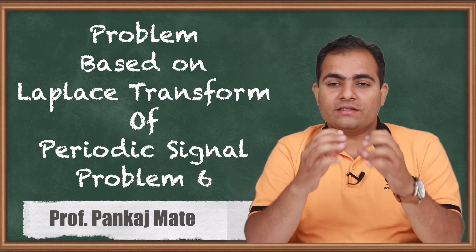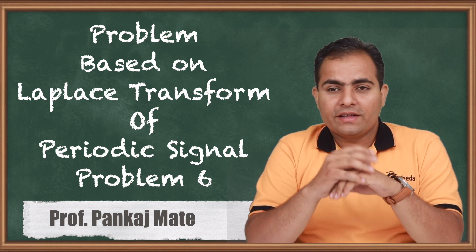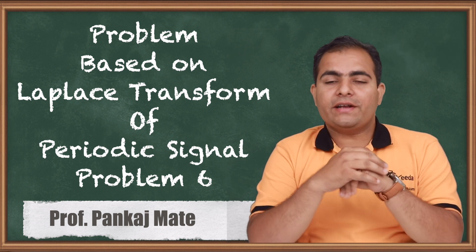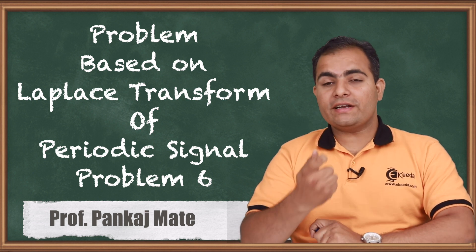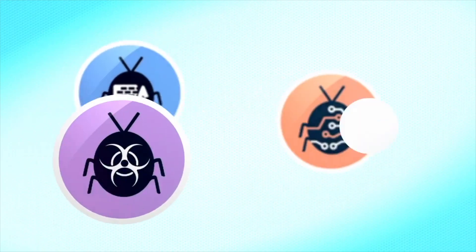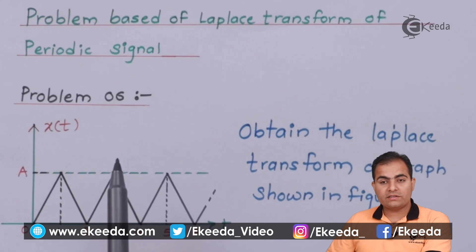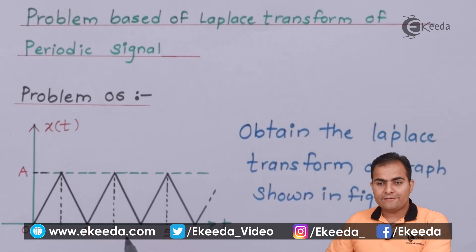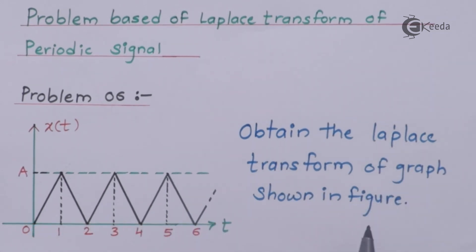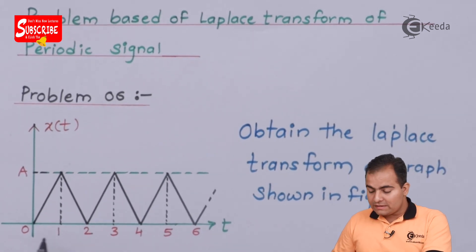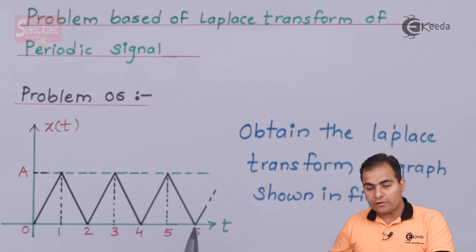The current numerical is similar to that RAM wave, but here we have both an increasing slope and a decreasing slope, and this set repeats itself after a given time interval. The question asks us to obtain the Laplace transform of a graph where between 0 to 1 we have an increasing slope, from 1 to 2 a decreasing slope, and this set repeats from 2 to 4, 4 to 6, and so on.